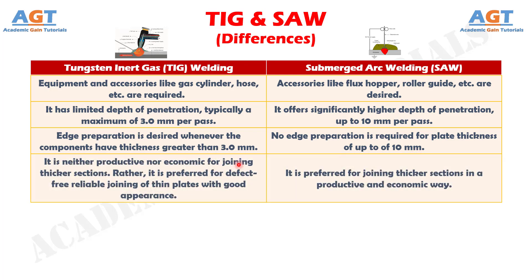Number 15: TIG welding is neither productive nor economic for joining thicker sections. Rather, it is preferred for defect-free reliable joining of thin plates with good appearance, whereas submerged arc welding is preferred for joining thicker sections in a productive and economic way.